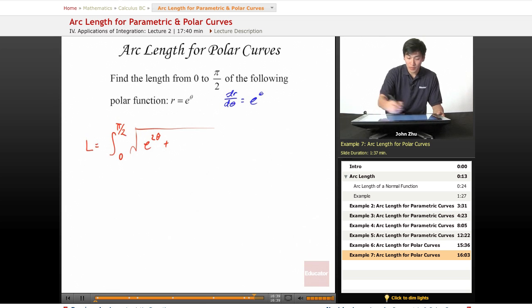So, this is going to be the same exact term, d theta. And we can combine terms here. 0 to pi over 2, square root of 2, e to the 2 theta, d theta.